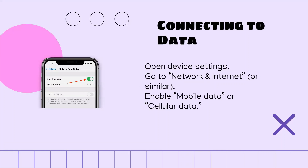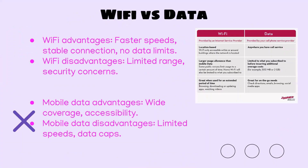To enable mobile data, you'll once again open your settings and go to Network and Internet or something similar. But instead of tapping Wi-Fi this time, tap Mobile Data or Cellular Data.